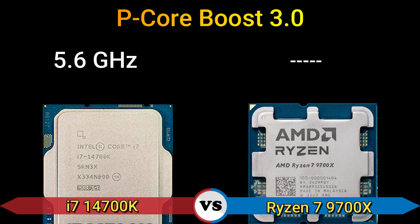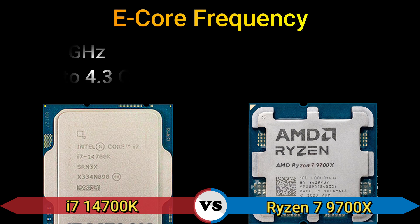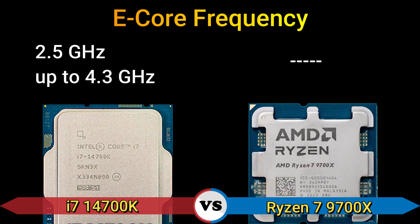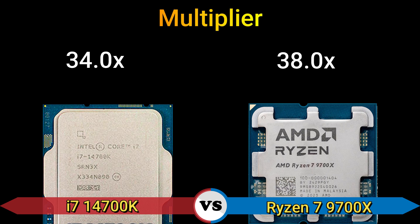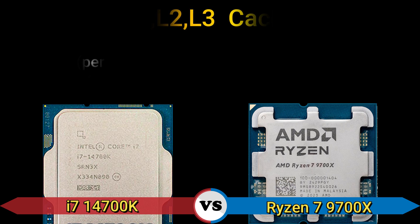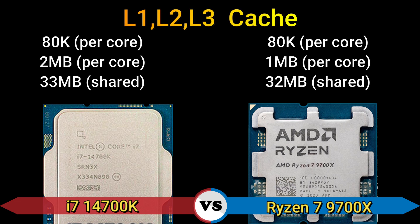Performance core boost 3.0: 5.6 GHz. Effective core frequency: 2.5 GHz up to 4.3 GHz. Base clock: 100 MHz. Multiplier: 34x and 38x. L1/L2/L3 cache: 80 KB per core, 2 MB per core, 33 MB shared; and 80 KB per core, 1 MB per core, 32 MB shared. Unlocked multiplier: yes.